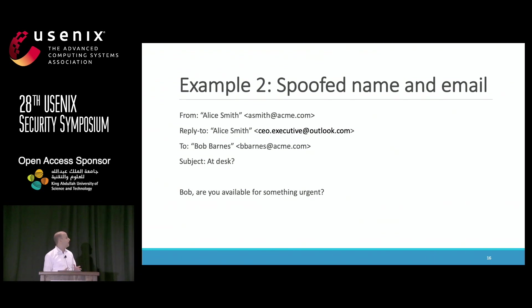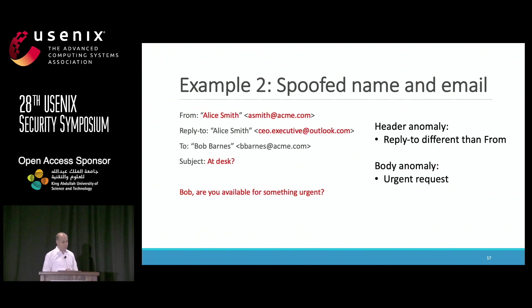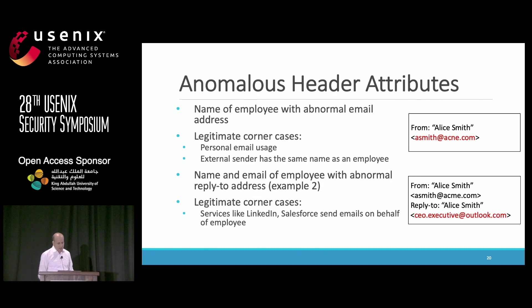In a second example, the attacker spoofs both the name and email address — sending from Alice Smith with her real acme.com address — but includes a reply-to that is different, to capture the recipient's response. The anomalous thing in the header is this weird reply-to address that's different from the sender address. Most people would not typically send an email with a reply-to different from the sender. The body again contains some kind of urgent request.